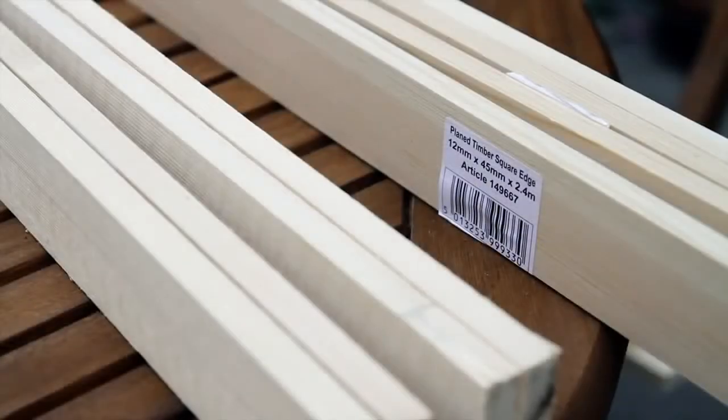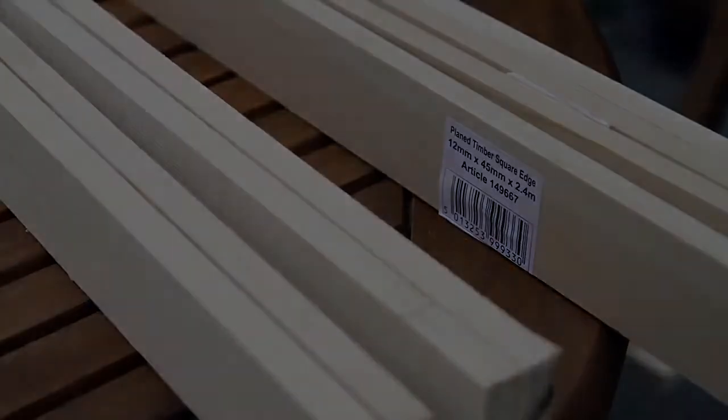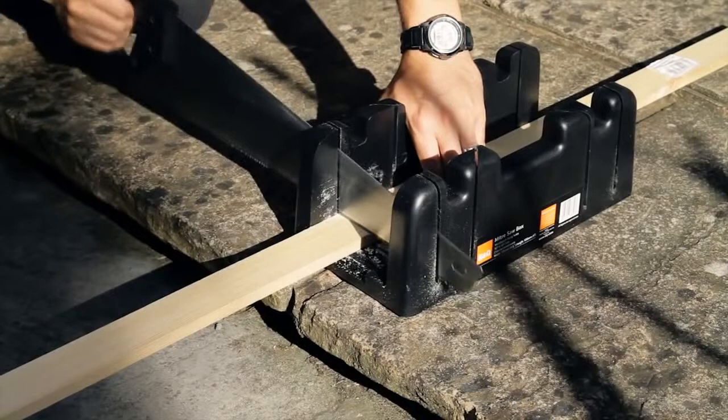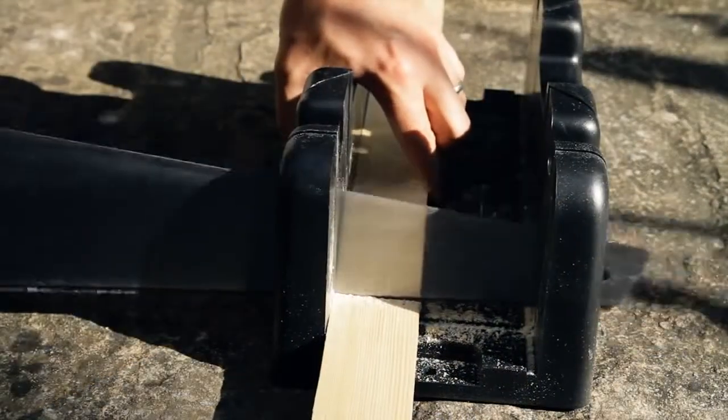You are going to need some wood about 1cm thick and 4.5cm deep. I got mine from Homebase in the UK and you can see the dimensions printed on the label. Cut the wood up so that you have two pieces of 119cm and two pieces of 61cm.